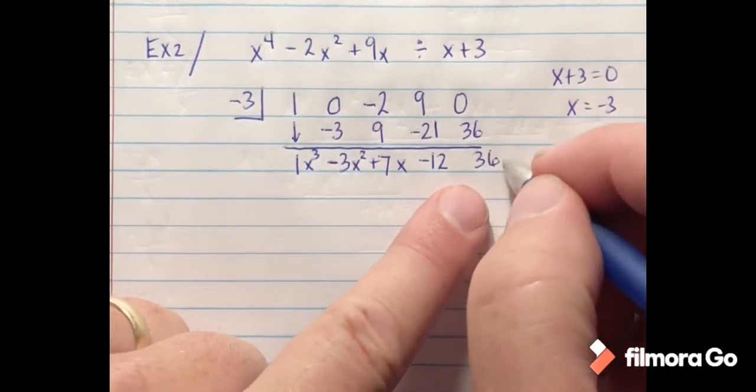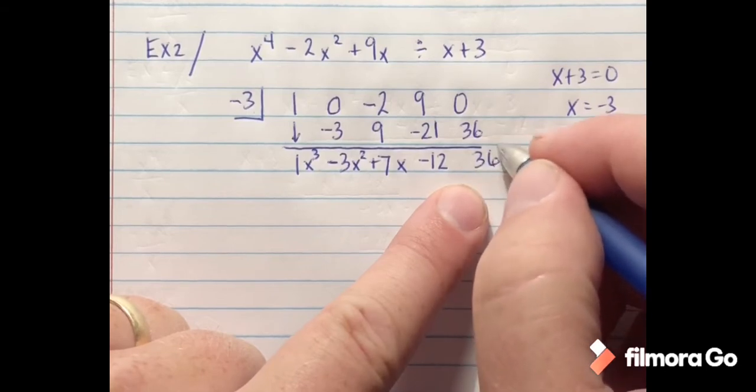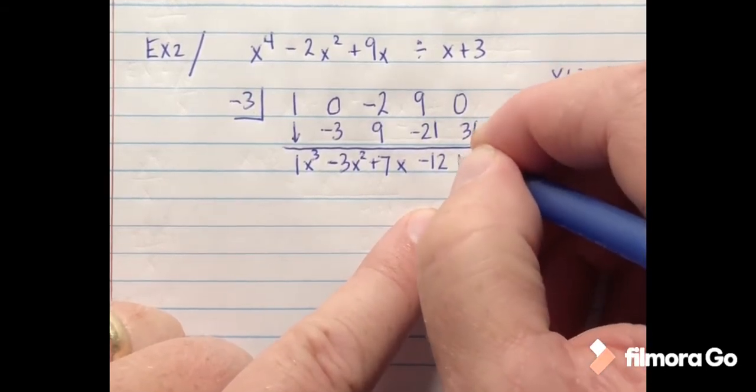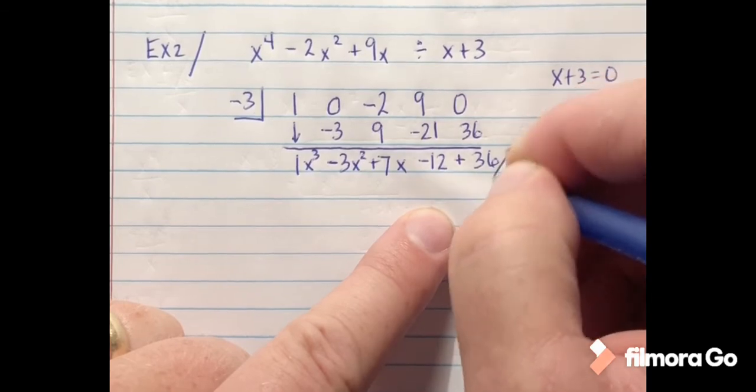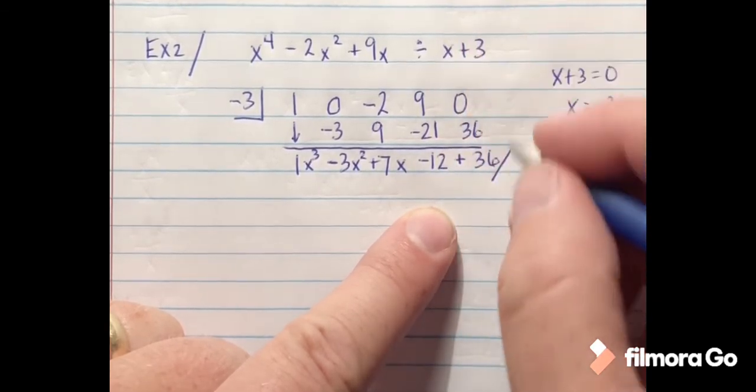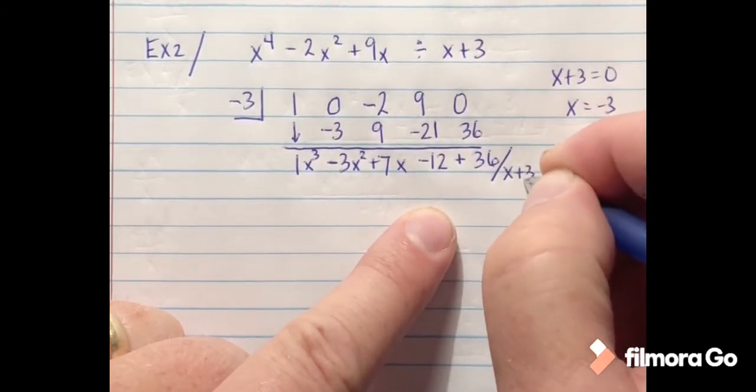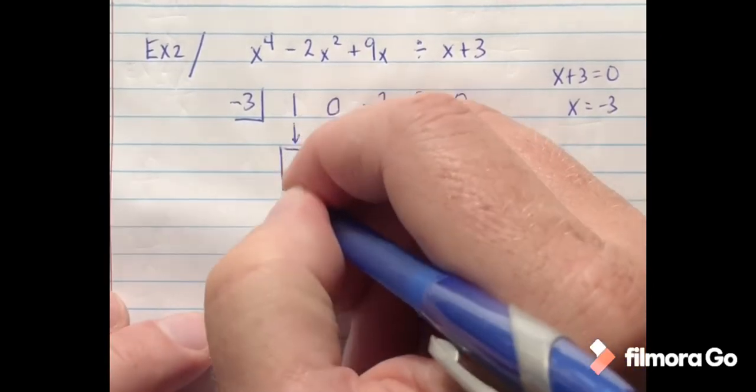And what that tells me is this 36, since I didn't get a 0, that's actually going to be my remainder. So that goes on the top of what I'm dividing by, that x plus 3.